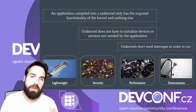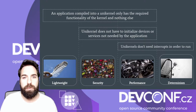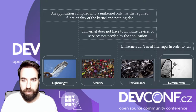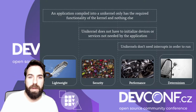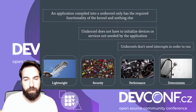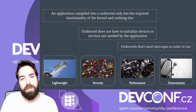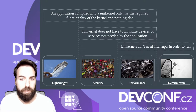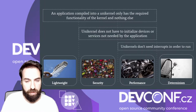Let's think about the Unikernel qualities. An application compiled into a Unikernel only has the required functionality of the kernel — nothing else — which gives us a lightweight size and memory footprint, along with the security benefits of having a reduced attack surface and also better performance. Also, Unikernels don't have to initialize devices or services that are not needed, improving security and performance and giving us really fast boot times.